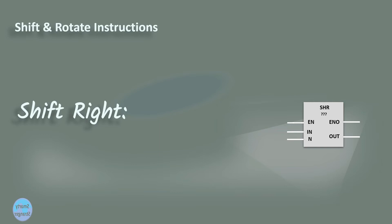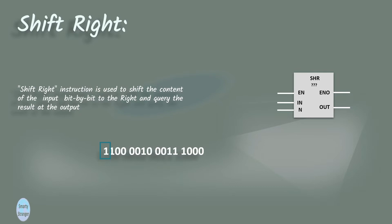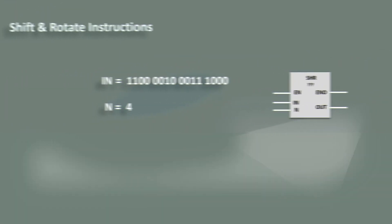First we take a look at the shift right instruction. Shift right instruction is used to shift the content of the input bit by bit to the right and query the result at the output. When values with signs are shifted, the free bit positions are filled with the signal state of the sign bit. When values without signs are shifted, the vacant space is filled with zeros.